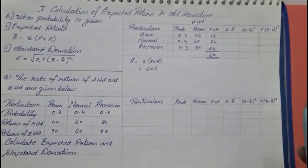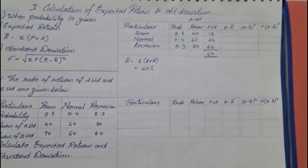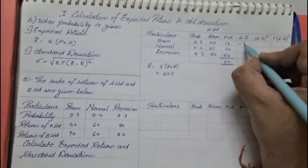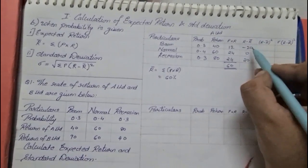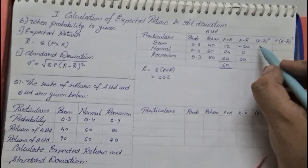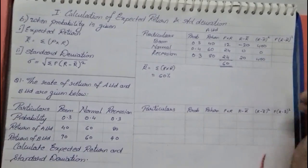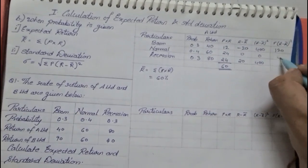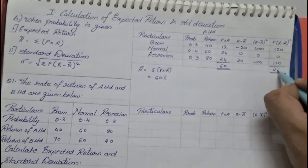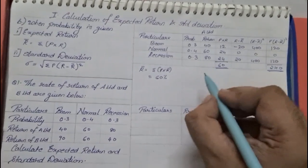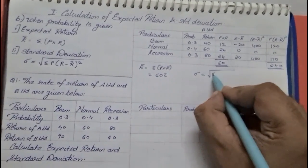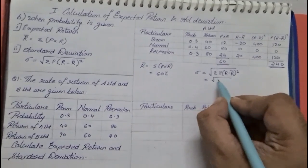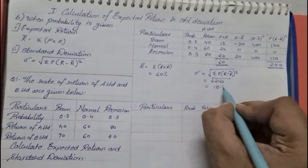Now let us find the standard deviation. The next column is r − r̄. The differences are: 40 − 60 = −20, 60 − 60 = 0, and 80 − 60 = +20. The squares are 400, 0, and 400. Multiplying each by probability gives: 0.3 × 400 = 120, 0.4 × 0 = 0, and 0.3 × 400 = 120. The total is 240. Standard deviation = square root of 240 = 15.49%.